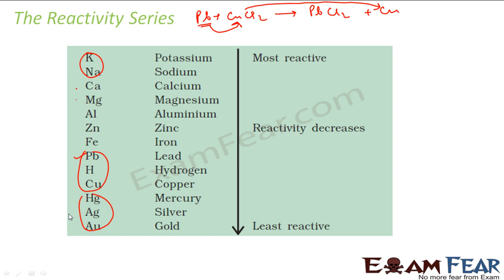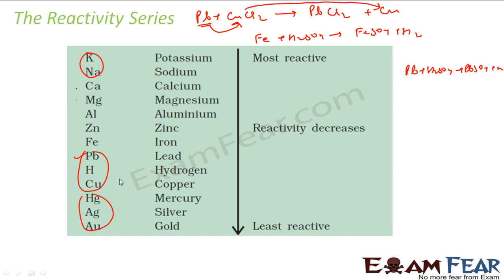If you take iron or potassium with H2SO4, you get FeSO4 plus H2. That means iron is able to displace hydrogen, so iron is above hydrogen in the reactivity series. Lead will also be able to displace hydrogen from H2SO4 — Pb + H2SO4 gives PbSO4 + H2 — but copper will not. So hydrogen is placed above copper. Similarly for gold and silver, displacement reaction is the best way to find the reactivity of elements.